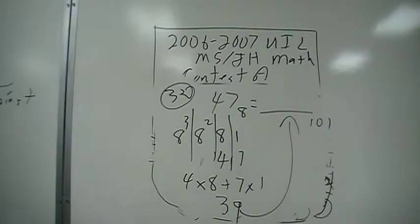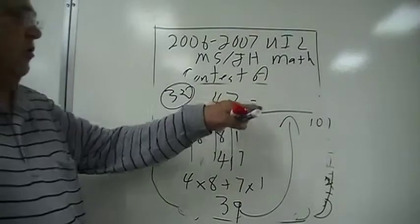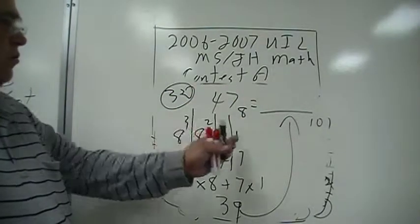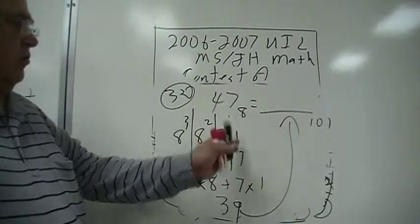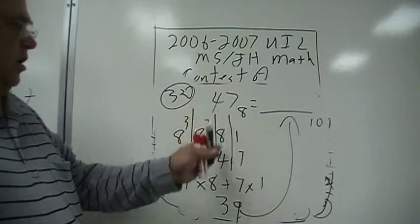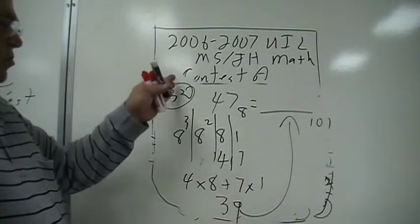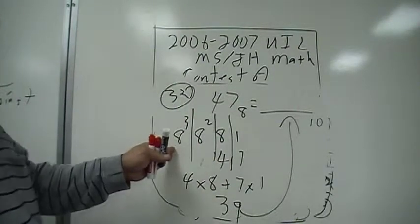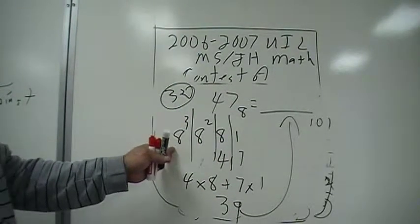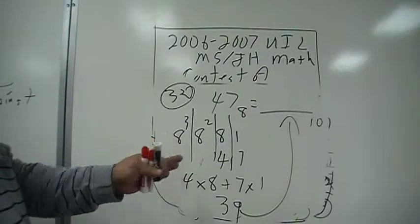Alright, for problem 32, 47 in base 8. Well, base 8 numbers: the first column is the 1s, then the 8s, then the 64s, and then whatever that is times 8.